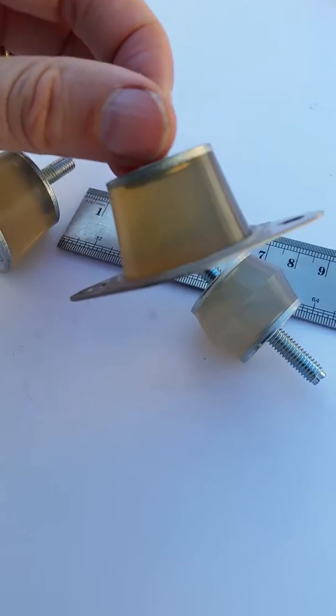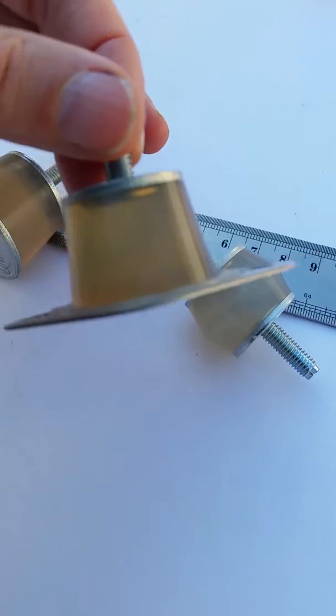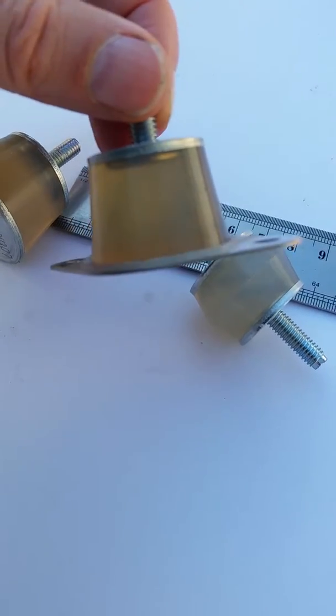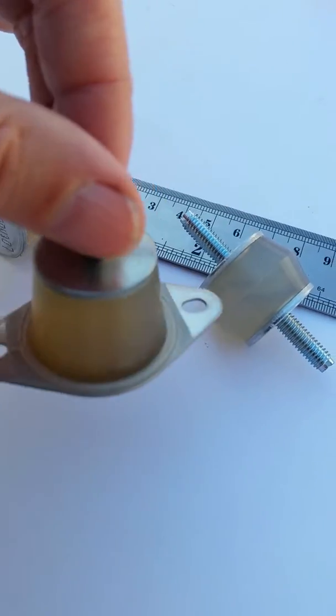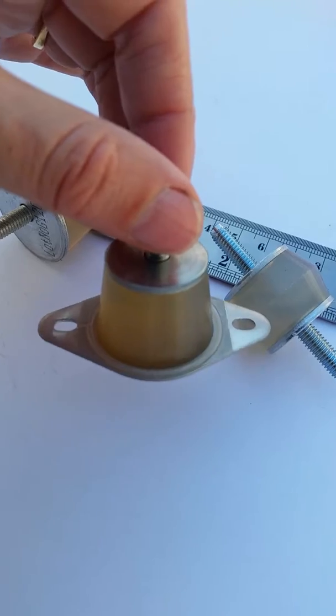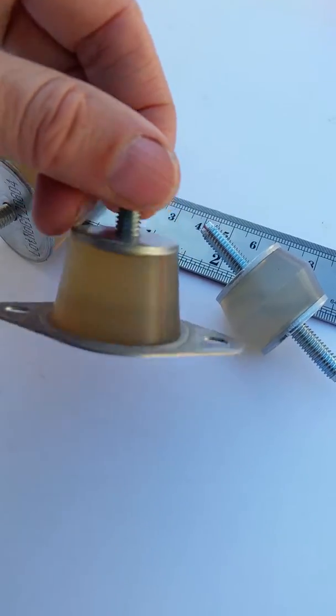This mount here has a flat bottom plate for stability and comes in three different hardnesses. It can damp load ranges from just five kilos up to 50 kilos when using four of them.